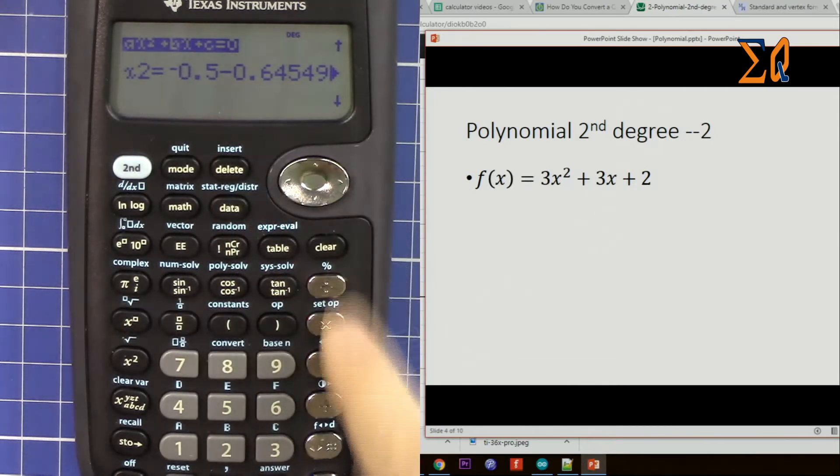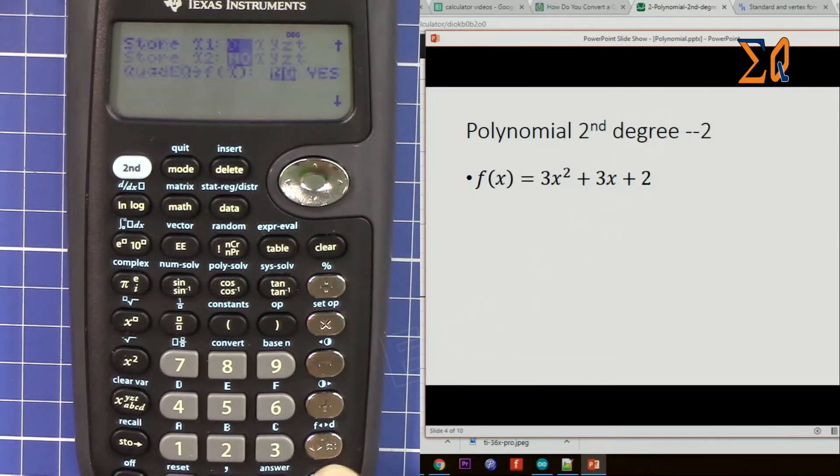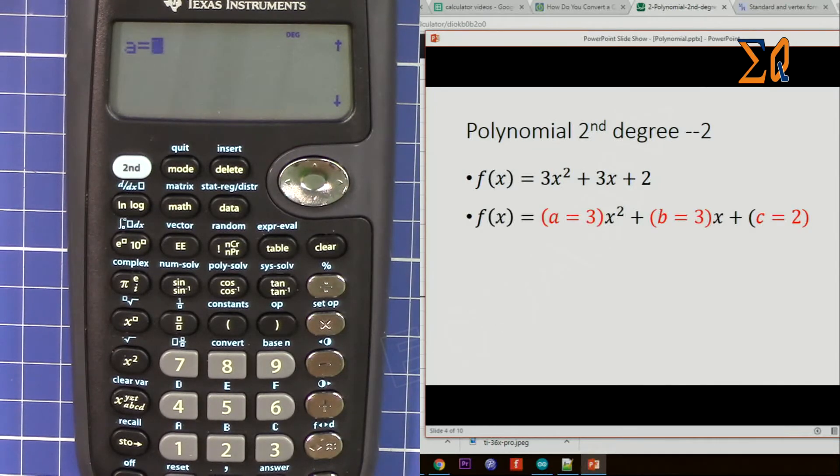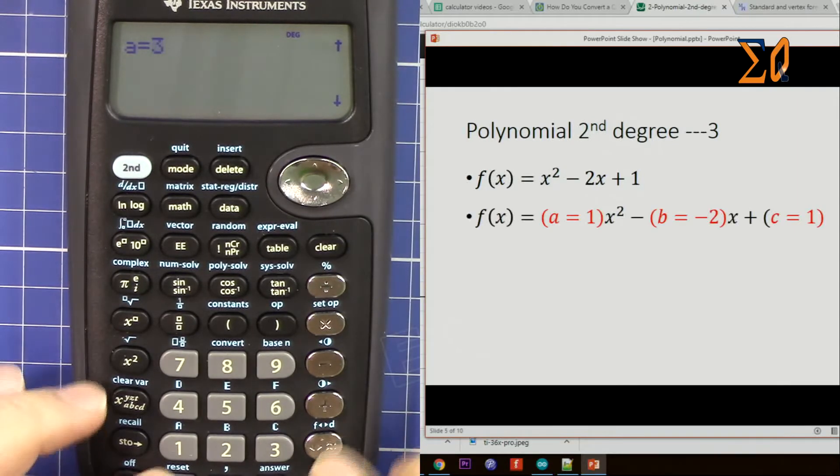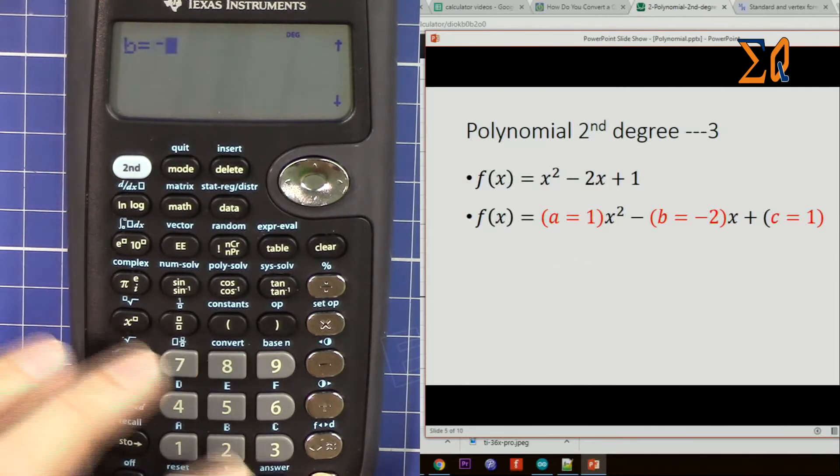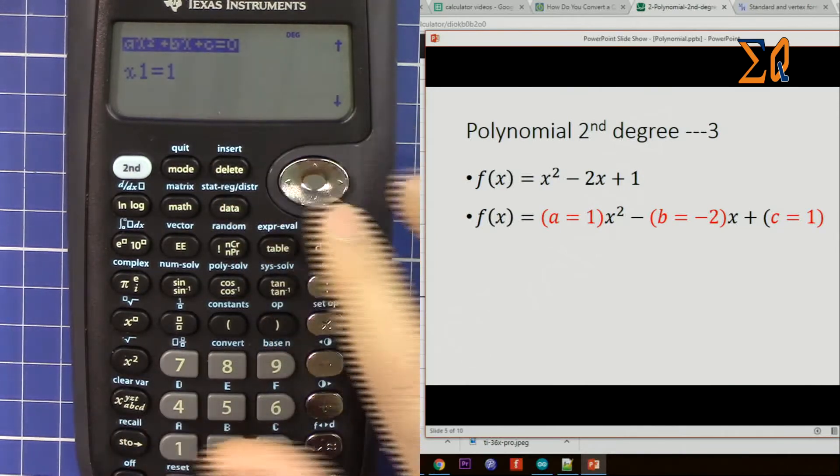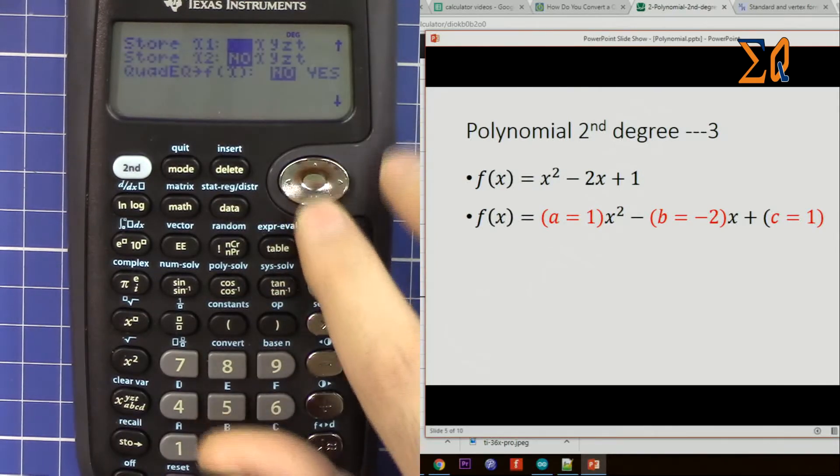So now let's do a polynomial of second degree, another one. So this time is 1, b is -2, c is 1. Now this time it's just a simple value.